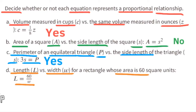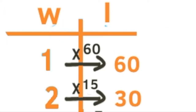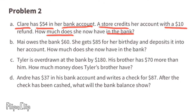Part d: length l versus width w for a rectangle whose area is 60 square units. The equation is l = 60/w. No, this does not represent a proportional relationship, because we're not constantly multiplying the width by the same number to get the length. For example, width 1 gives length 60 (60 times greater), and width 2 gives length 30 (15 times greater). There is no constant of proportionality.